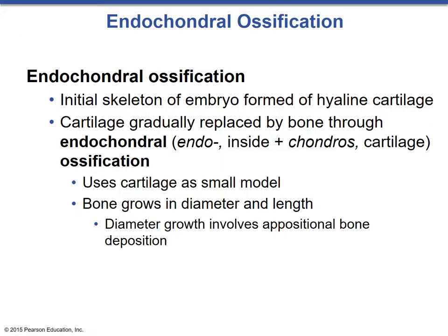The next type of ossification is endochondral ossification. The major difference is that endochondral ossification tends to focus on long bones, and it begins not from the deep dermis but from a hyaline cartilage blueprint. The initial skeleton of the embryo is formed of hyaline cartilage, which is gradually replaced by bone. 'Endo' means inside, and 'chondro' means cartilage — we use the cartilage as a model or blueprint. The bone will grow in diameter via appositional bone deposition, much like rings of a tree, as well as in length.